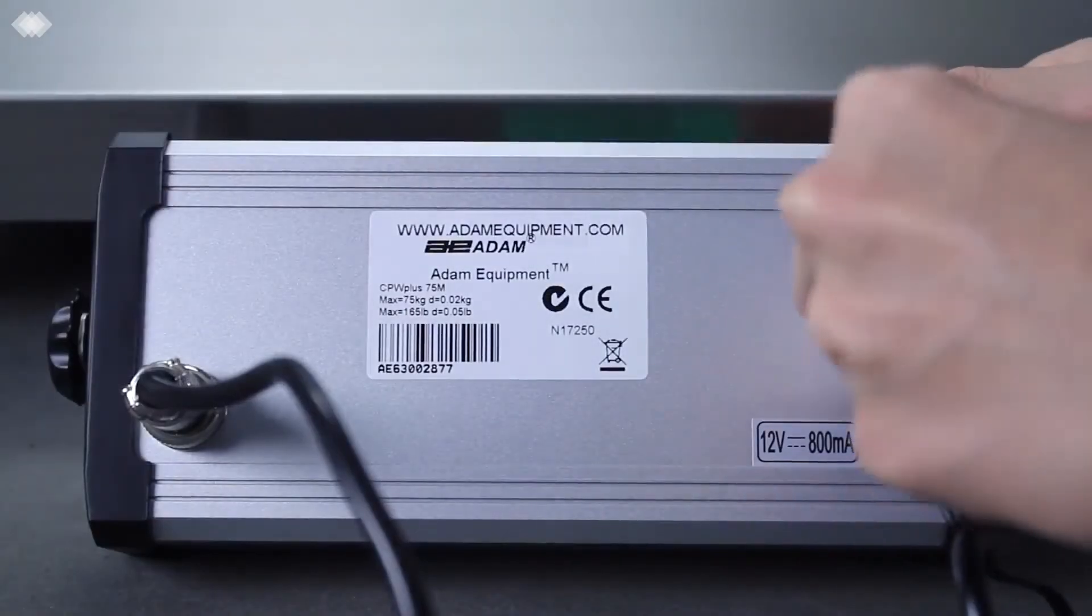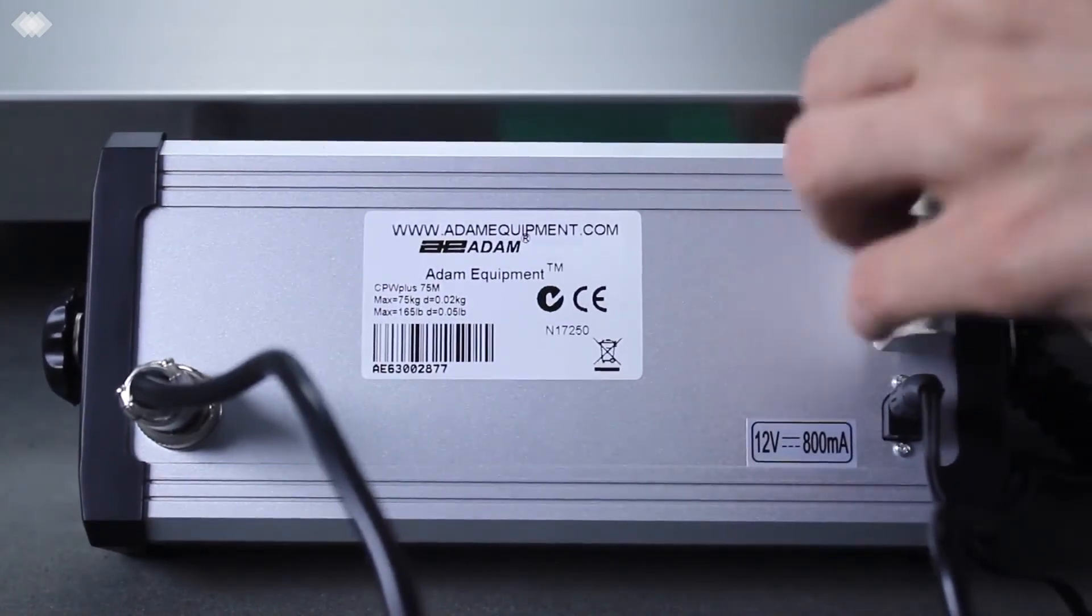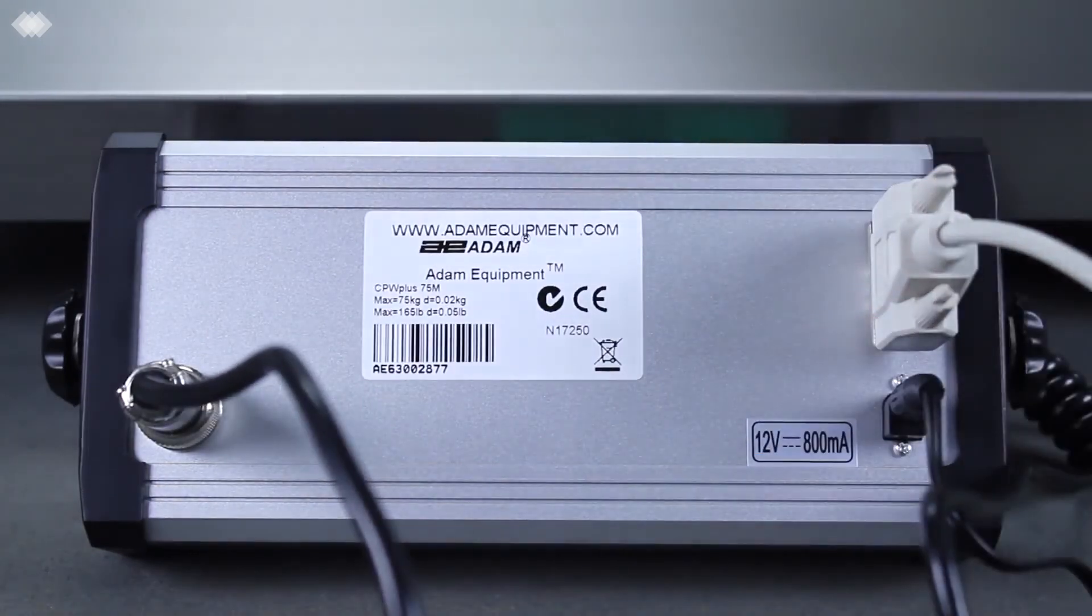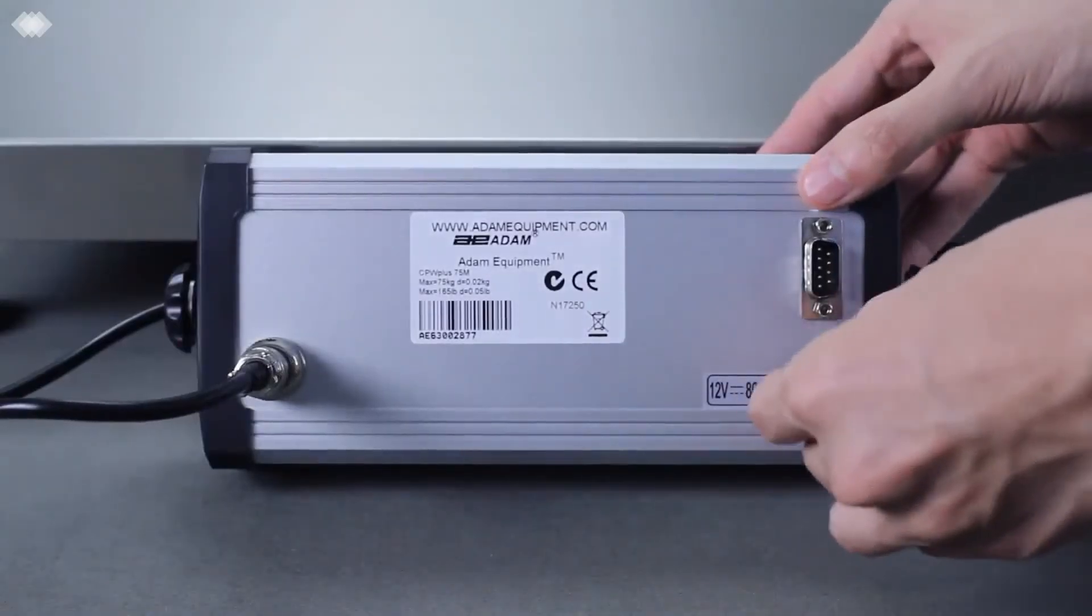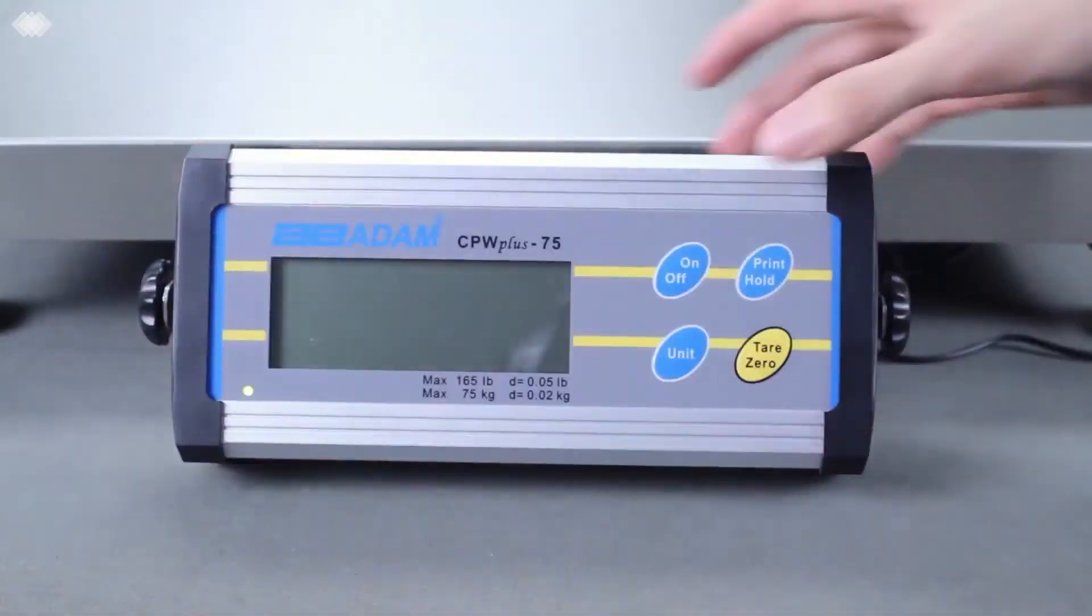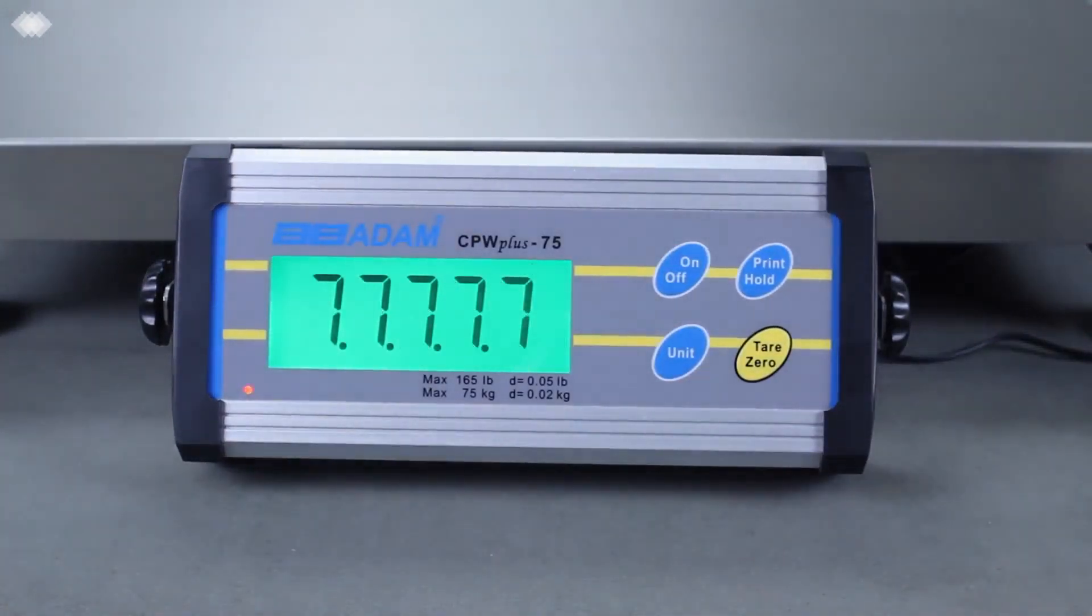For easy and fast connection to a printer or computer, the CPW Plus M and L scales feature an RS-232 port. Powered with a rechargeable battery, CPW Plus M and L platform scales are the right choice for animal and industrial weighing tasks.